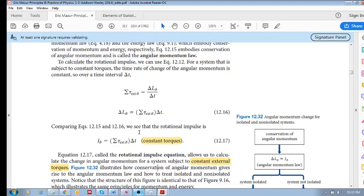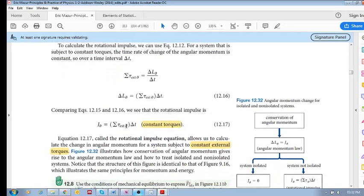Similarly, rotational impulse is equal to the sum of the external torques times delta t. So calculate the external torques multiplied by the time interval and you have your rotational impulse.